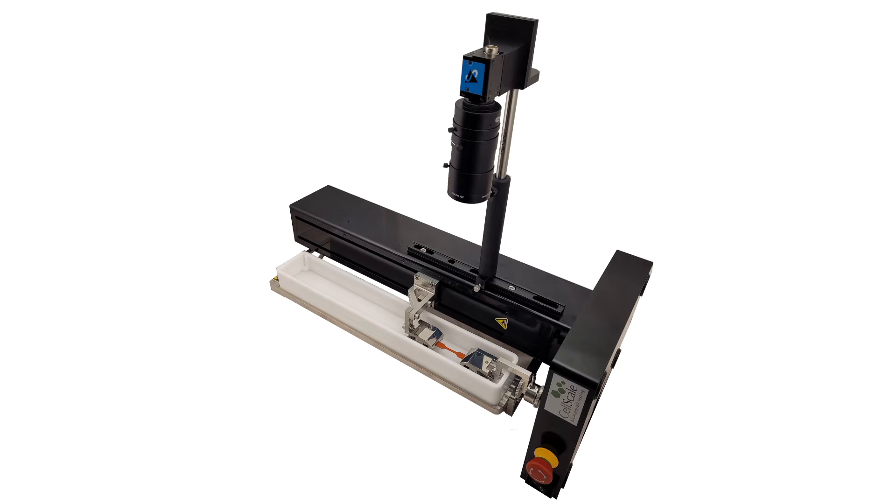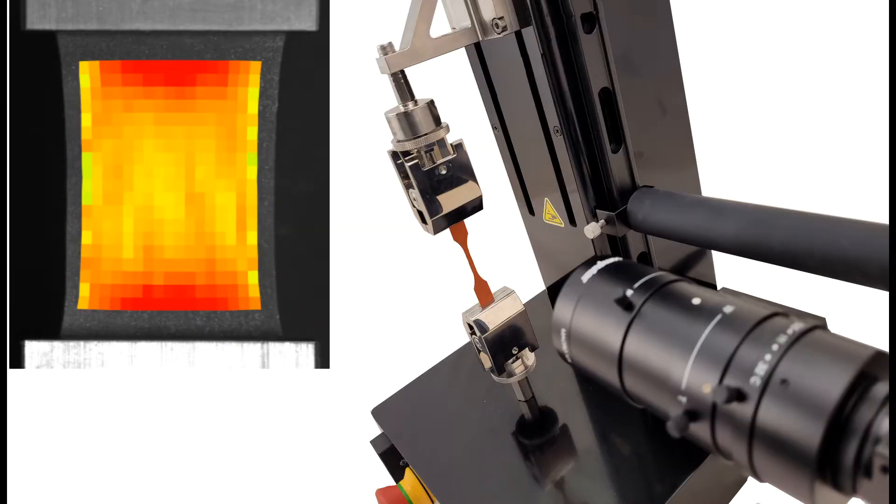The UniVert comes standard with a webcam for visual feedback to the user but the system can also be upgraded with the scientific imaging system. This allows not only for image capture but also post-test analysis of the specimen strain using digital image correlation techniques.